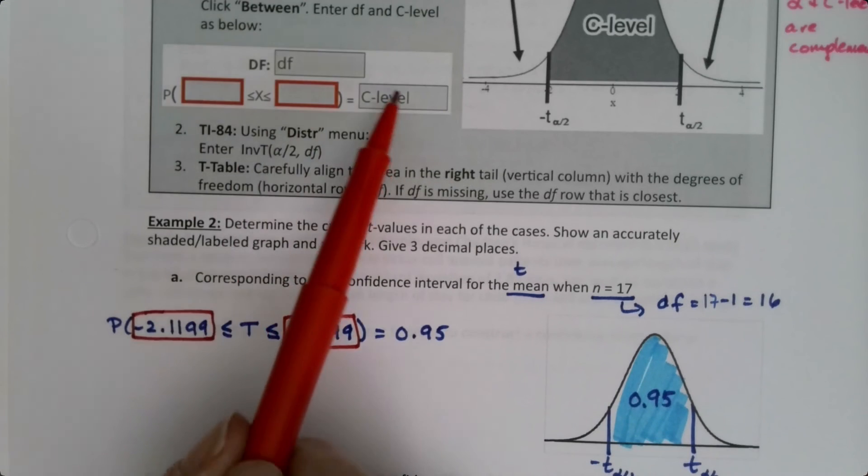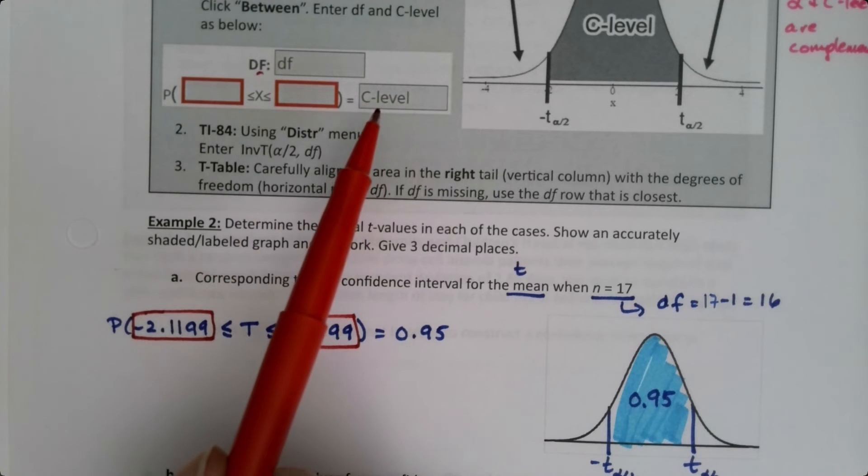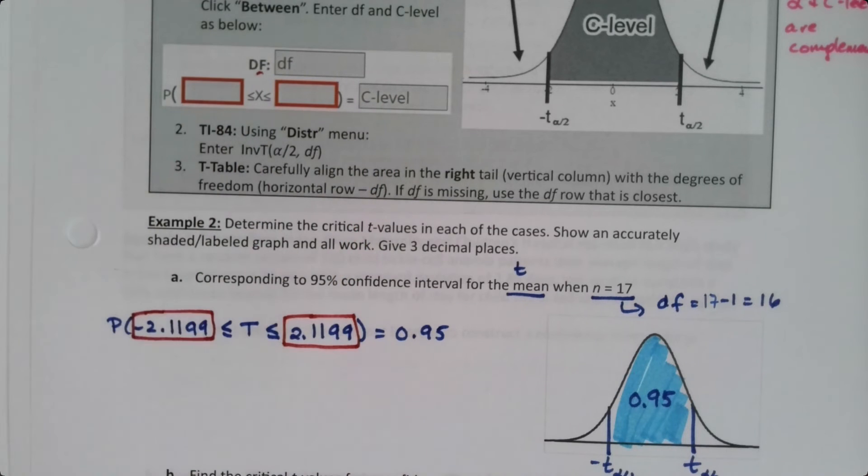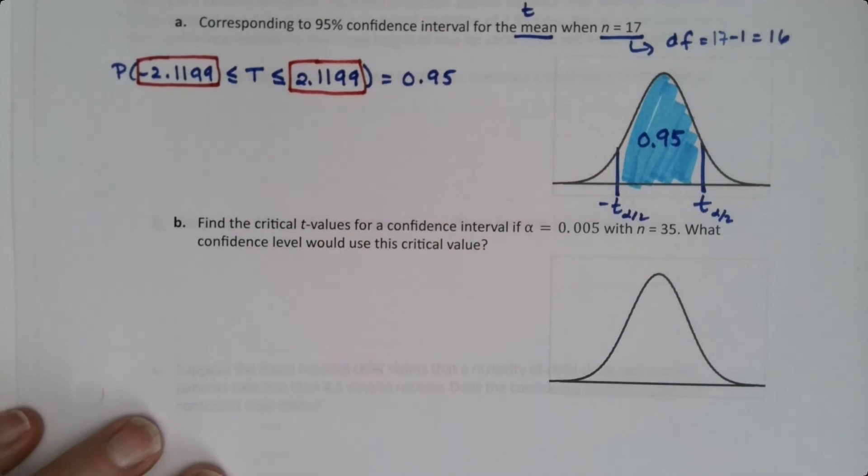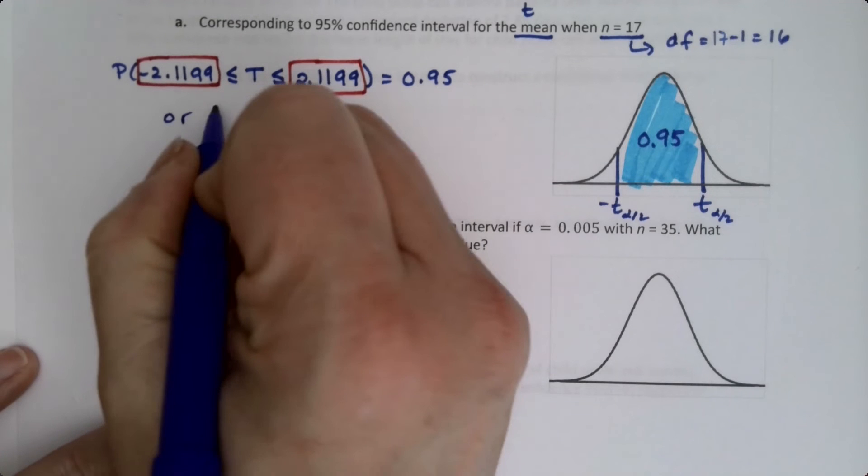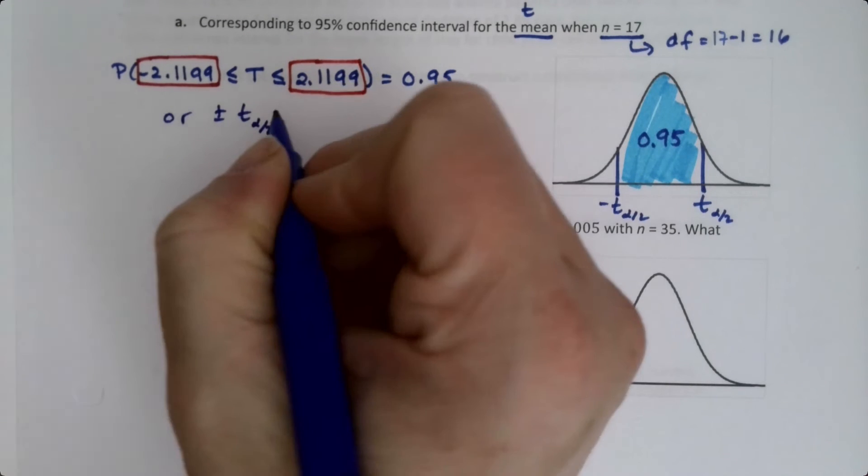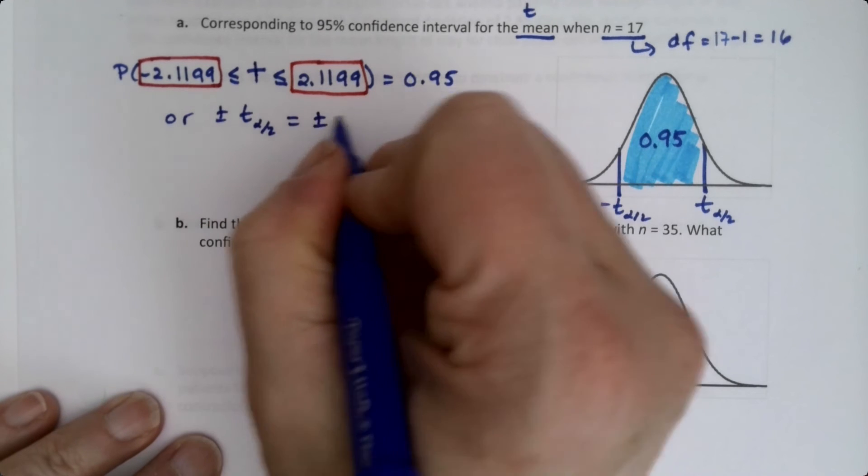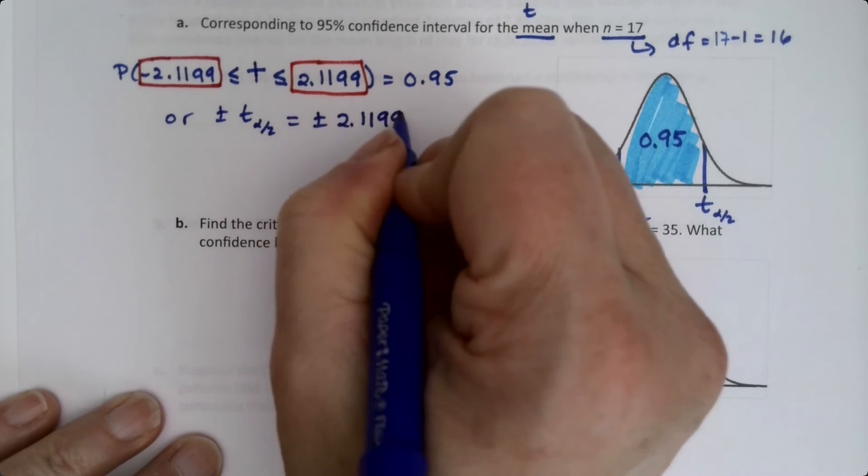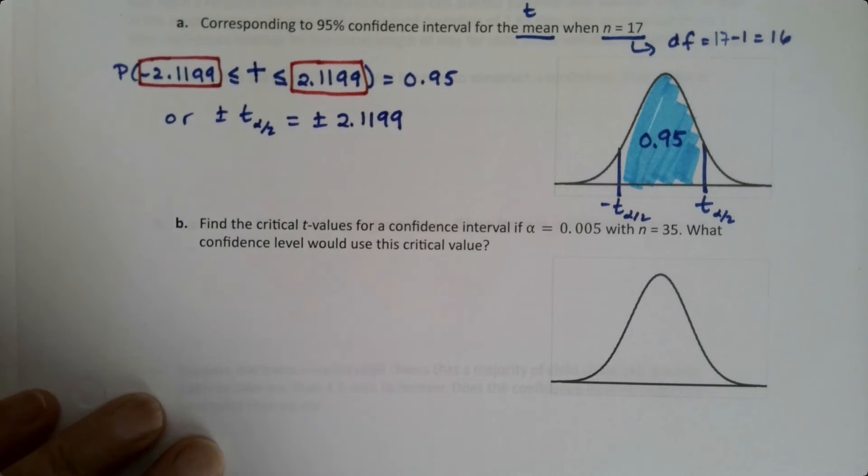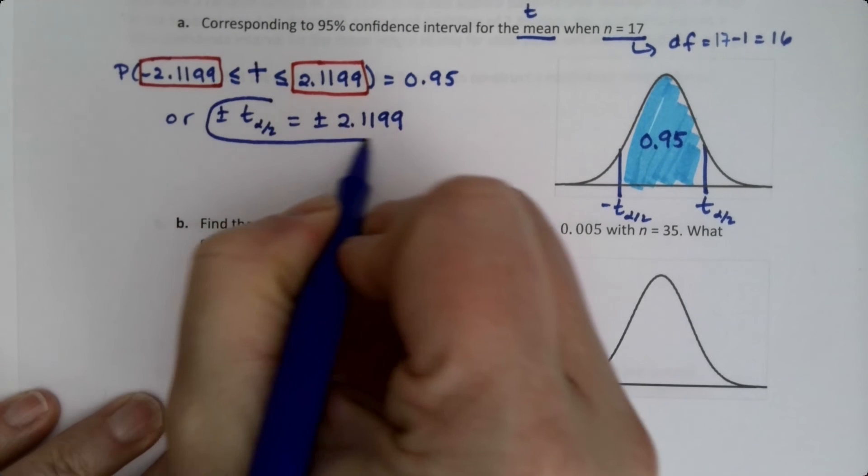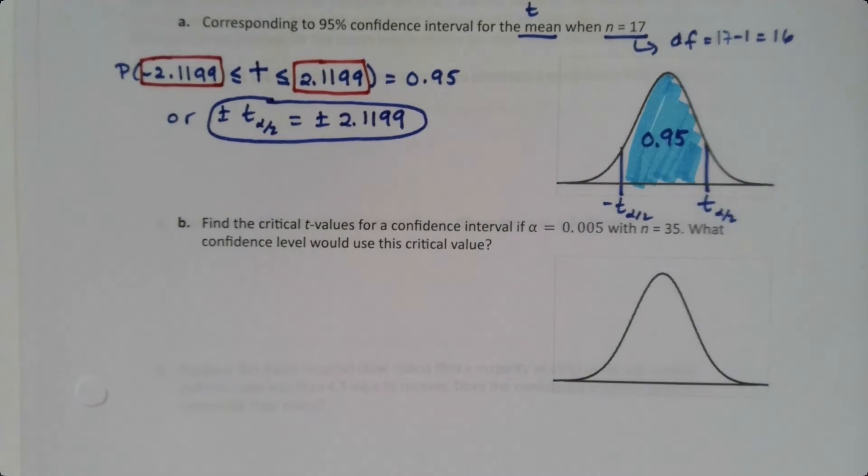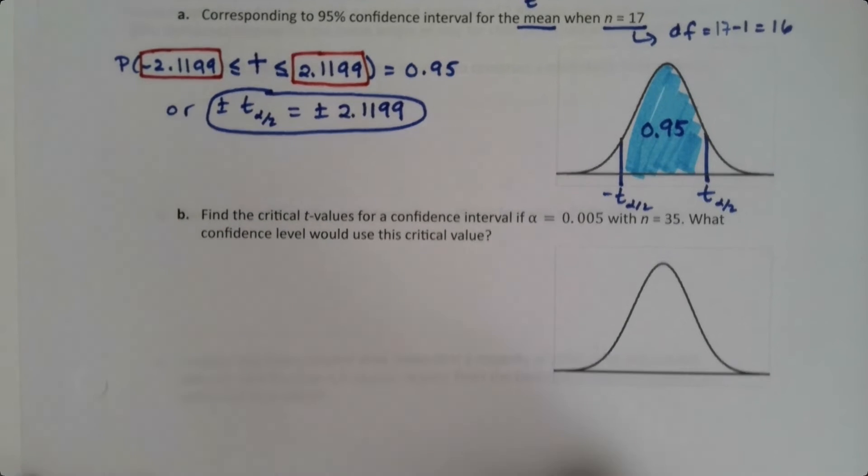That's what it says to do right in here. You put your degrees of freedom in, you put your confidence level in, and your answers will be in the two red boxes. Or you could say plus or minus T alpha over 2 is equal to plus or minus 2.1199. That's another way to put it. There you go. Alright, so then what about down here?